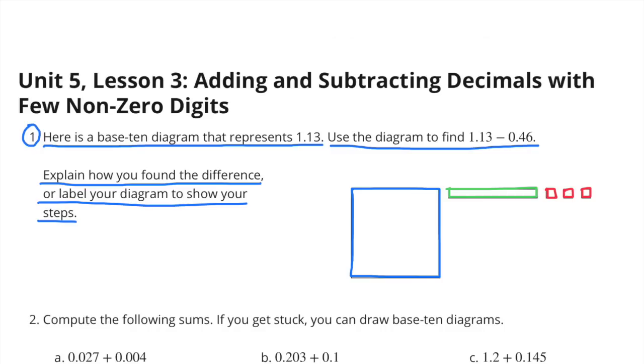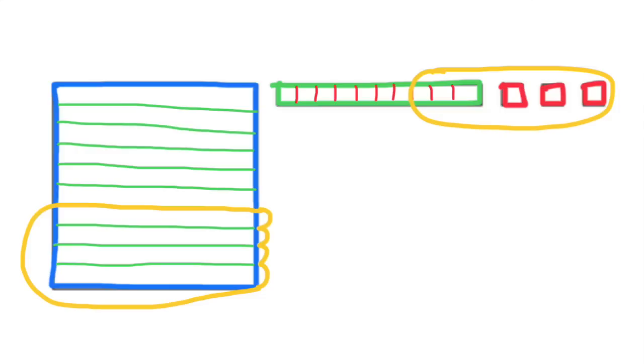Explain how you found the difference or label your diagram to show your steps. The blue diagram represents 1, the green diagram represents 1 tenth, and the three red diagrams represent 3 hundredths. Since we're supposed to be subtracting 46 hundredths, we'll take away 4 tenths and 6 hundredths.